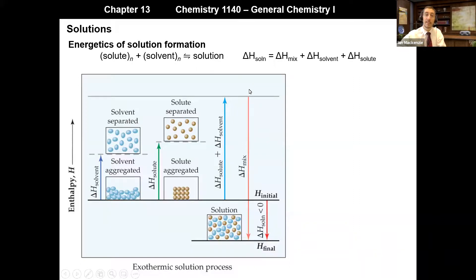And so the net is that we end up at a lower energy after we've mixed them than what we started out individually. And thus, if delta H mixing is more negative than the sum of delta H solute and delta H solvent, we end up with a net negative value and an exothermic reaction.